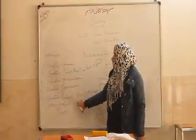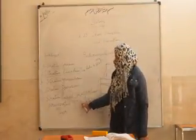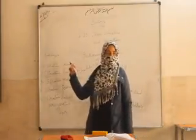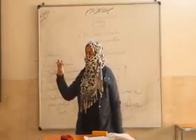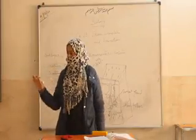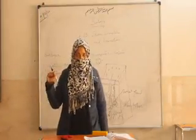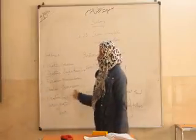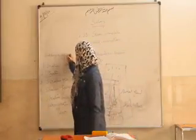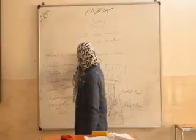The sublayers of the epidermis are stratum spinosum and stratum basale. Stratum lucidum is actually found on two places of the body: the palm of the hand and the sole of the feet. So these are the sublayers of epidermis.